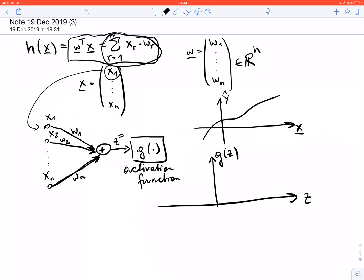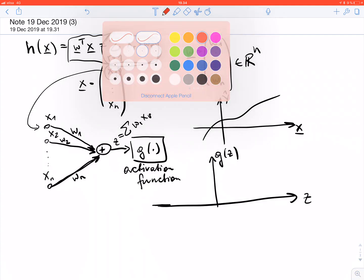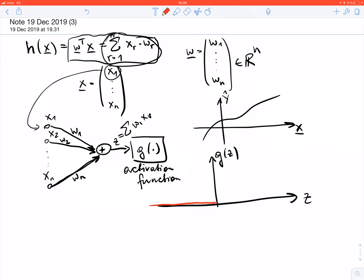Let's focus on one particular choice for this non-linear activation function. This activation function takes the input which is the weighted sum of the features and produces a non-linear function. Here we take 0, and for positive values g of c equals c if c is larger or equal than 0, and for negative arguments g of c is 0. This function is sometimes referred to as rectified linear unit, or ReLU for short.